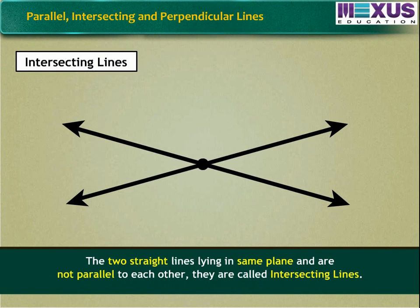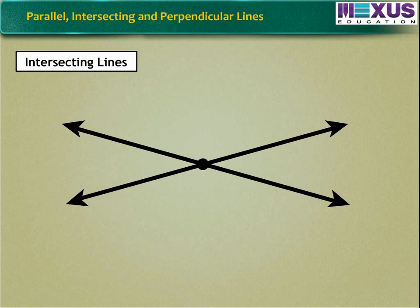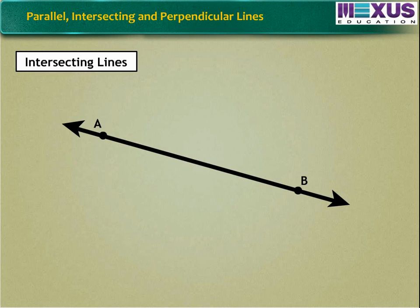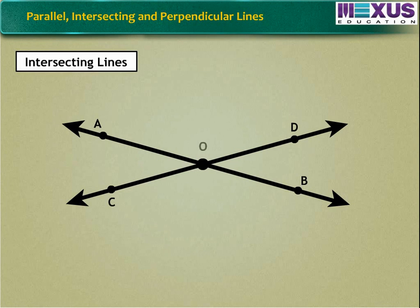The two straight lines lying in same plane and are not parallel to each other, then they are called intersecting lines. The figure given here shows two lines AB and CD which are not parallel. Such lines either intersect at a point O or will intersect at a point O when produced.